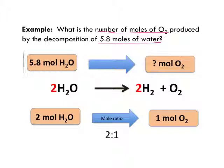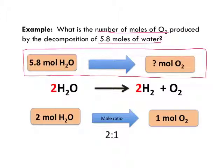So here is another way of expressing it. If we had 5.8 moles of water, how many moles of oxygen would that produce? Now you clearly need the chemical reaction to solve that, and in particular, we need to know the mole ratio.